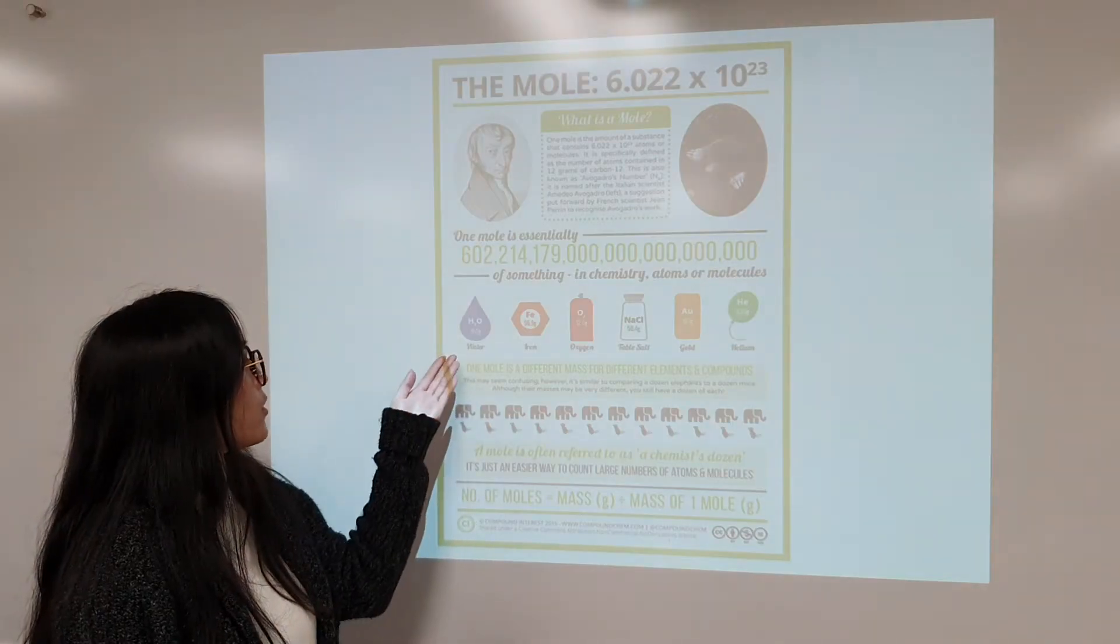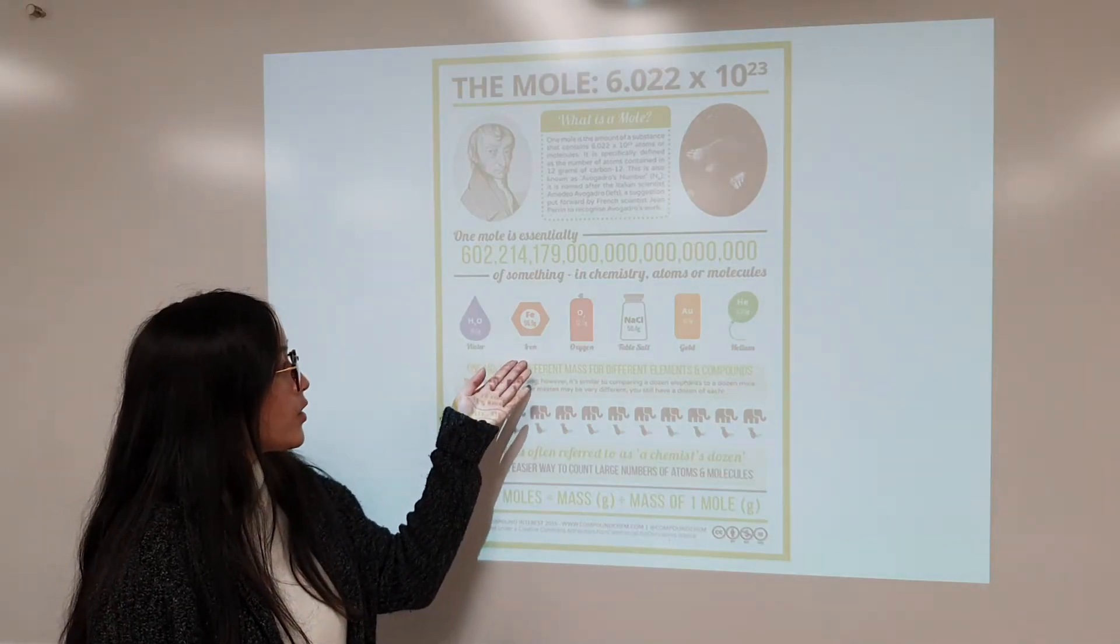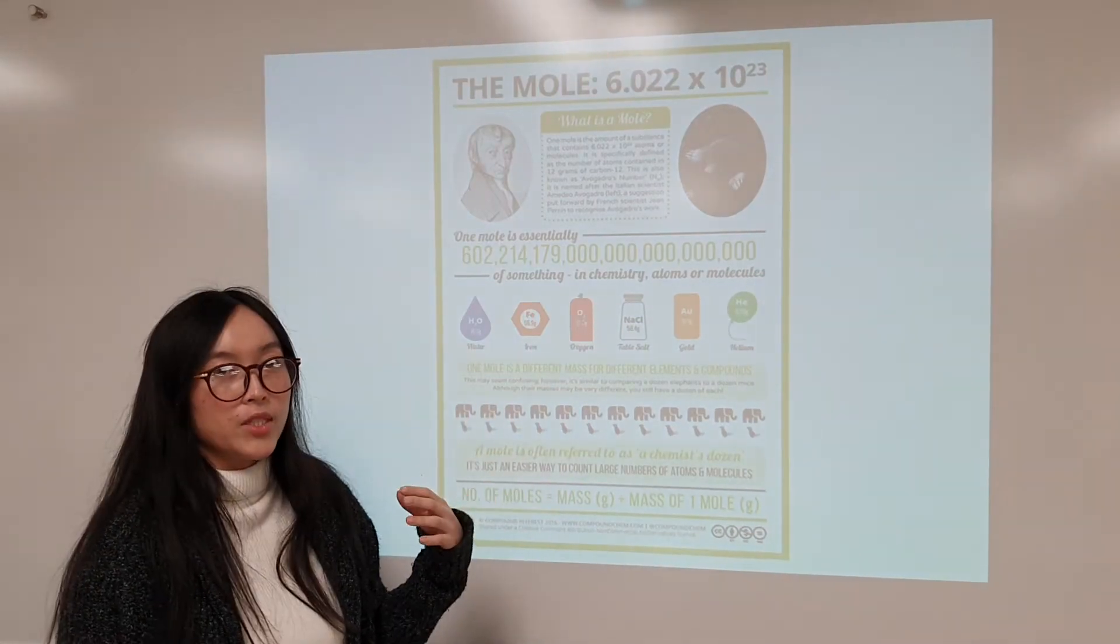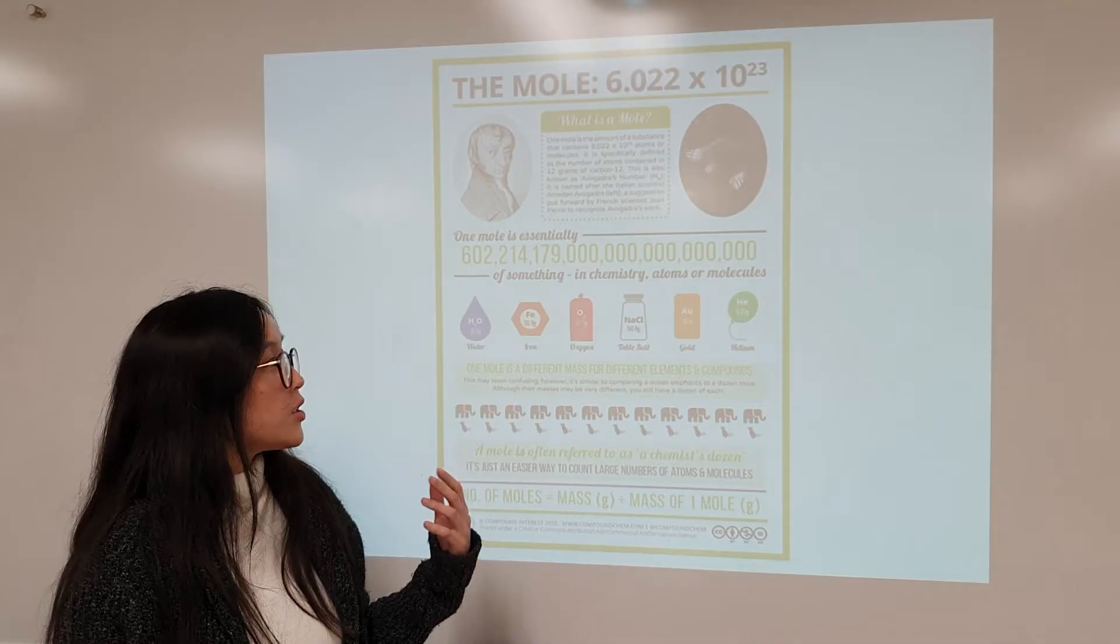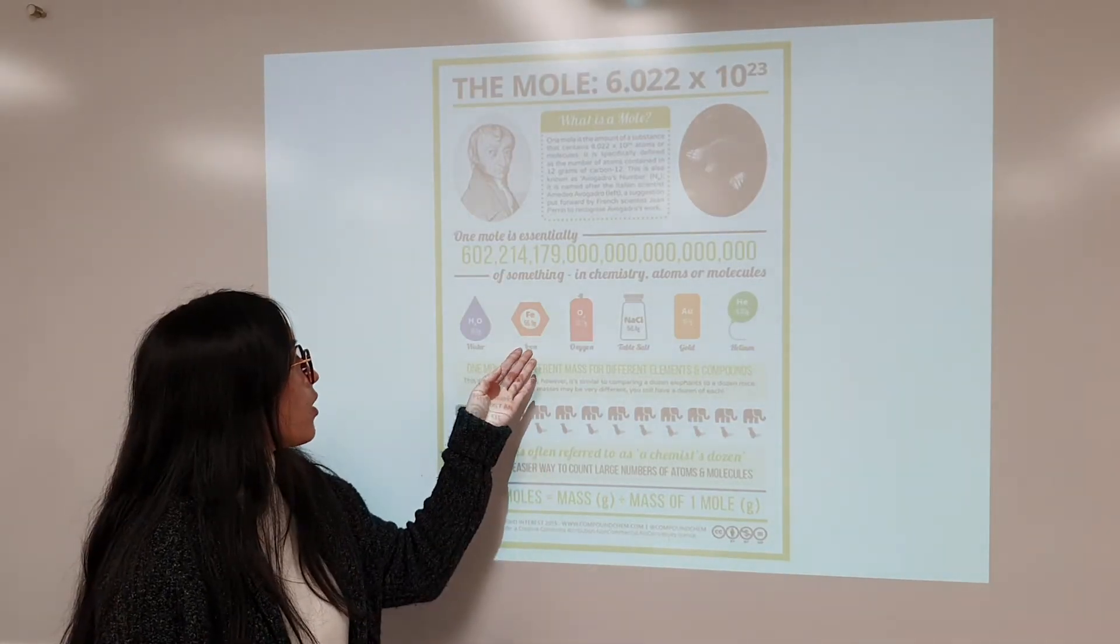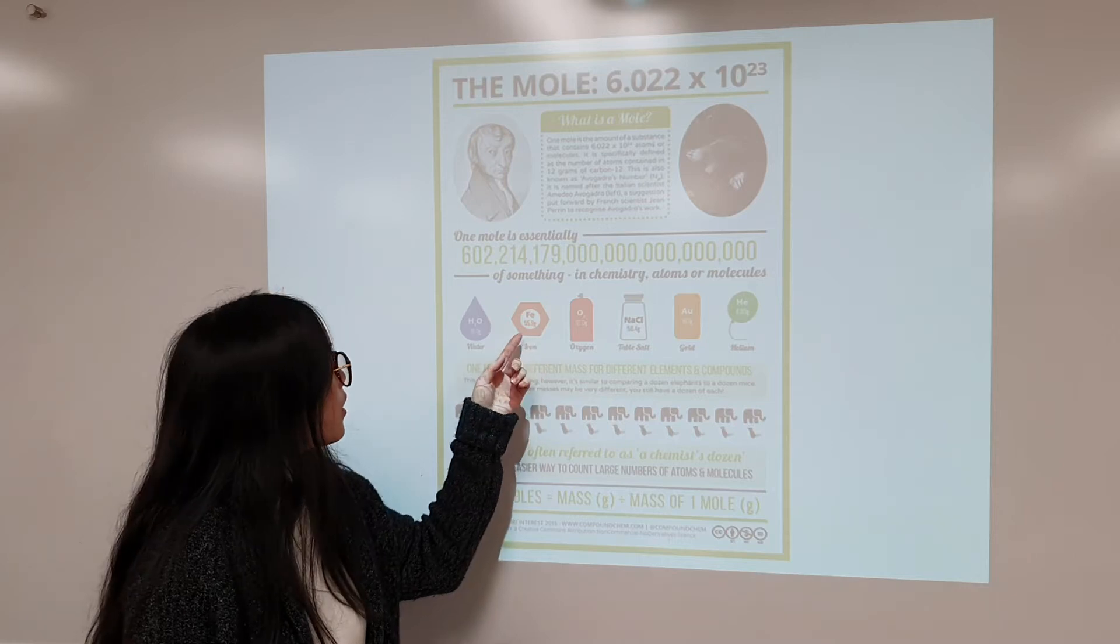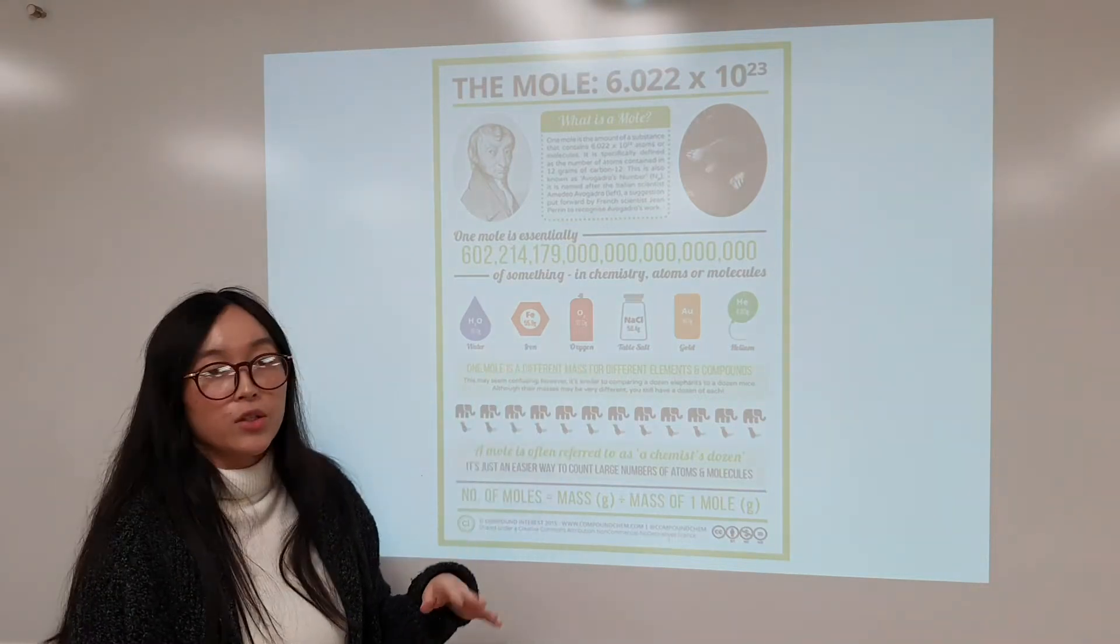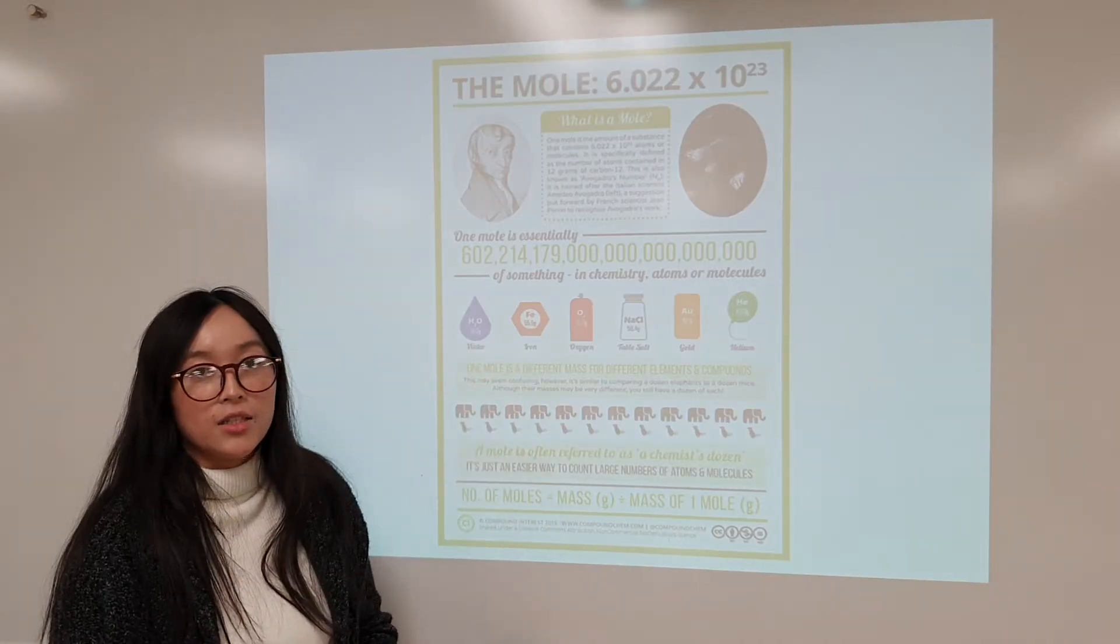And similarly, when you compare different elements such as iron or oxygen, one mole of them is still 6.022 times 10 to the 23rd. But their masses are different. So iron mass is around 55, oxygen mass is about 32. Iron mass is a lot bigger.